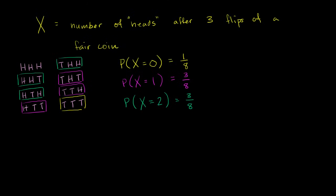And finally, what is the probability that our random variable X is equal to three? For X to equal three, we would have to get three heads when we flipped the coin. There's only one out of the eight equally likely outcomes that meets that constraint — heads, heads, heads — so it's a 1/8 probability.